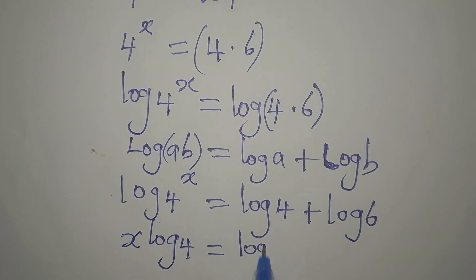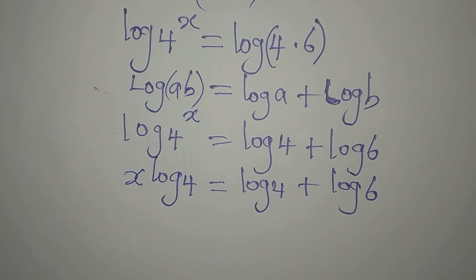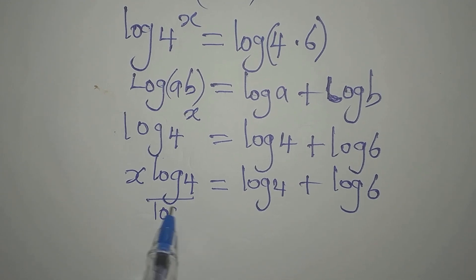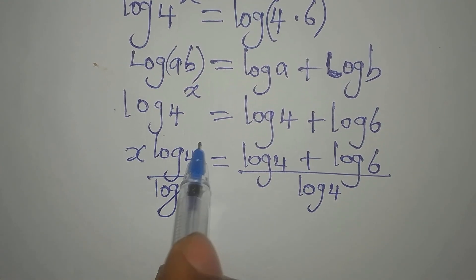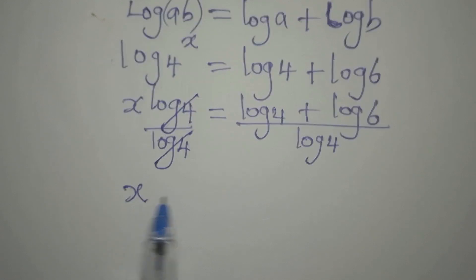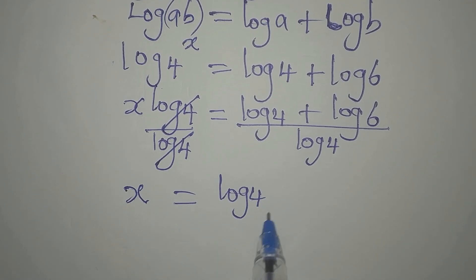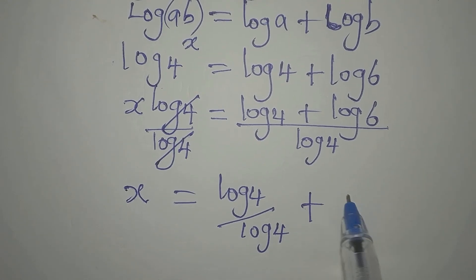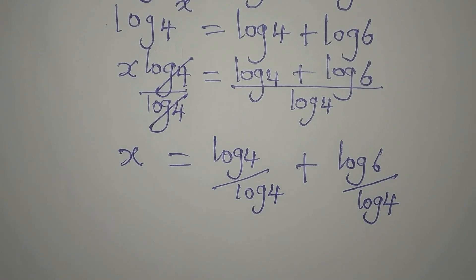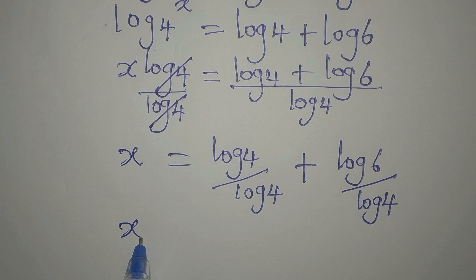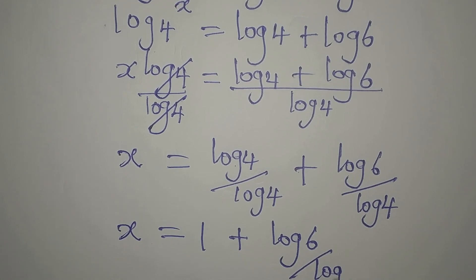So we have x log 4 equals log 4 plus log 6. To get the value of x, we divide both sides by log 4. This cancels on the left, and on the right we get log 4 divided by log 4 plus log 6 divided by log 4. Since log 4 over log 4 is 1, we have x equals 1 plus log 6 divided by log 4.